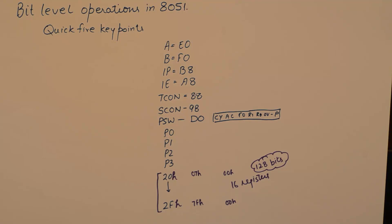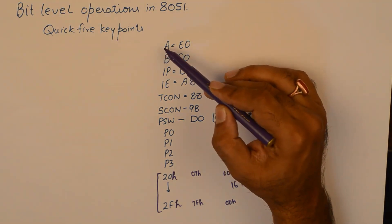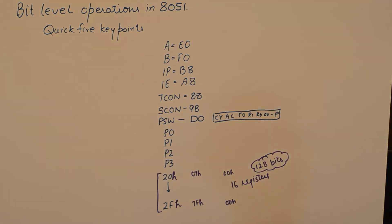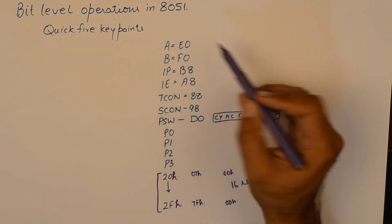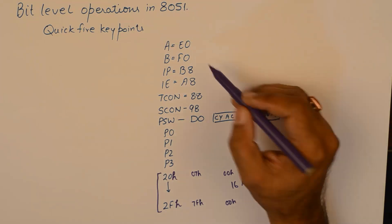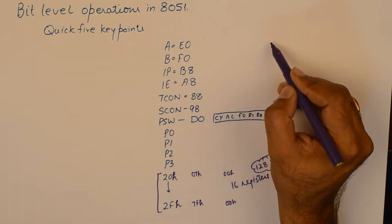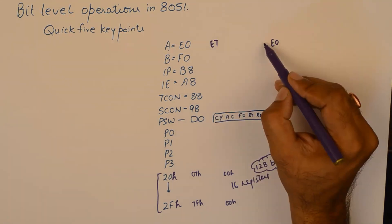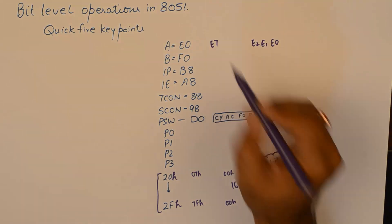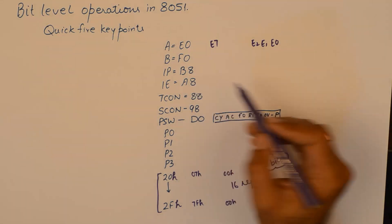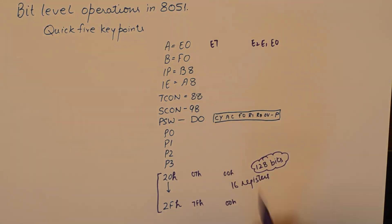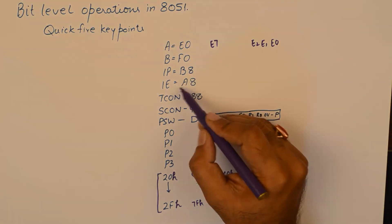And the other thing that we need to be aware of is the list of SFRs which are bit addressable. I've written down the SFRs which are bit addressable. For example, accumulator has an address E0, so the individual bits of this register will have addresses from E0 to E7. You can find out the addresses of each bit in these registers very easily.